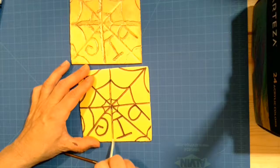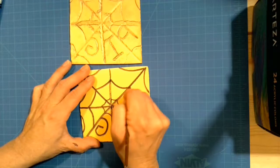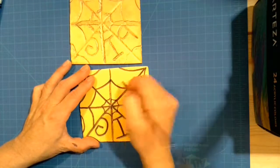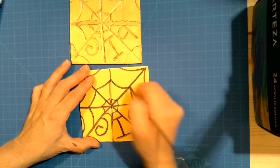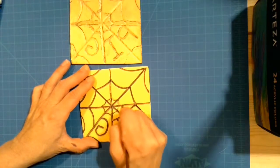So everywhere that I made a line I'm going to use my tool to press an indentation on my styrofoam piece. Now I want to make sure that I go around and do this on every line that I made.